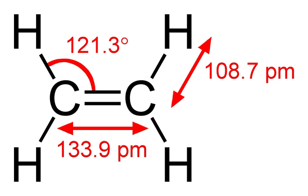Much of this production goes toward polyethylene, a widely used plastic containing polymer chains of ethylene units in various chain lengths. Ethylene is also an important natural plant hormone and is used in agriculture to force the ripening of fruits. Ethylene's hydrate is ethanol.